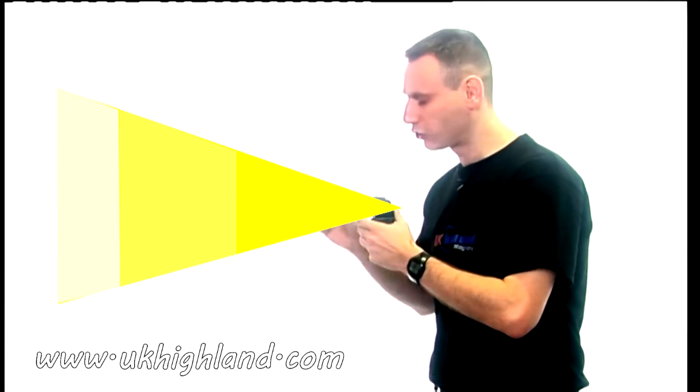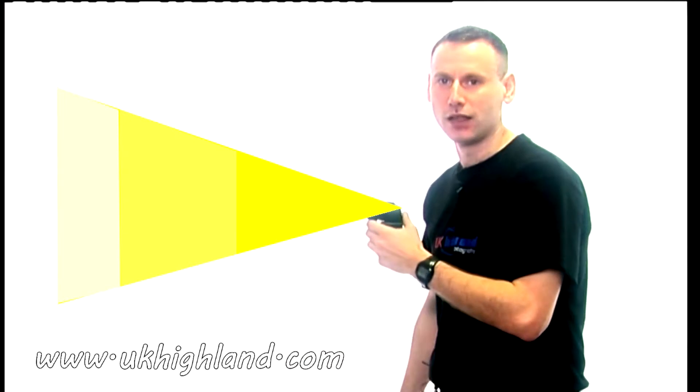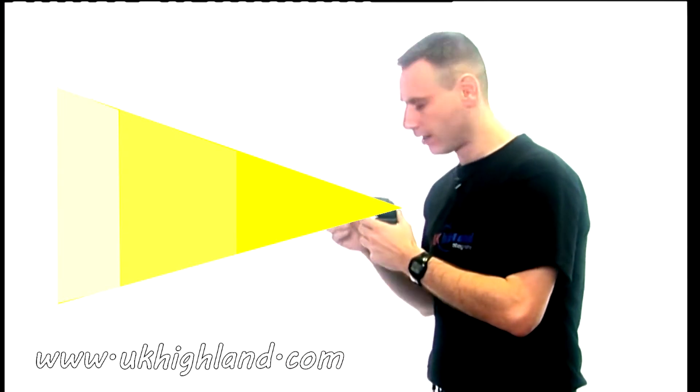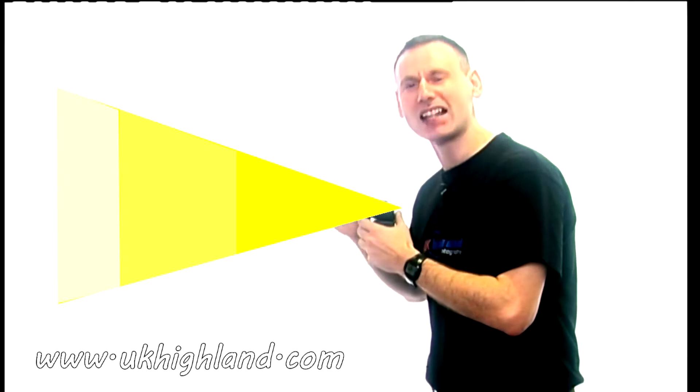When a flash leaves a flash unit, there's two main things to take into consideration. First, the light is at its most powerful setting when it leaves the light unit. And two, it is at its most narrowest point in the Inverse Square Law.